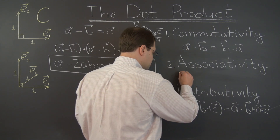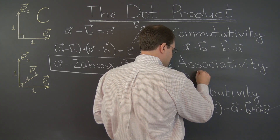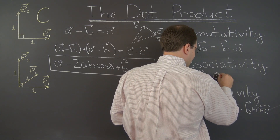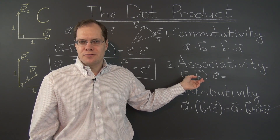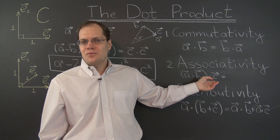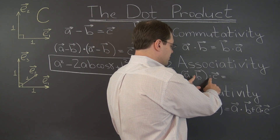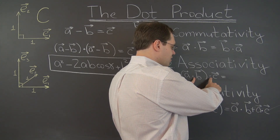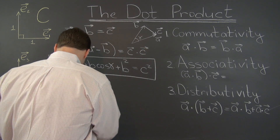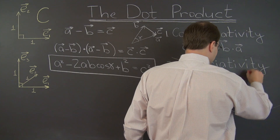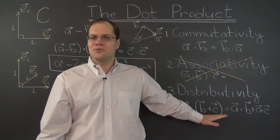What about associativity? That would look like something like: A dotted with B dotted with C — but this expression is completely nonsensical. A dotted with B is a number, and you cannot dot a number with a vector. So associativity cannot even be considered; I'm crossing it out. Not that it fails — it simply cannot even be considered.